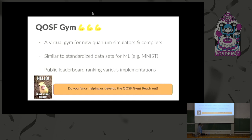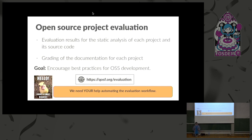We need help developing this — if you fancy helping us build the QOSF gym, reach out because we have limited bandwidth. Also in this pillar is the open source project evaluation currently accessible on the QOSF website. The idea is to have evaluation results for static analysis, things like code coverage of various projects, but also a grading scheme for documentation — encouraging best practices and helping newcomers decide which project to spend their time on. You probably don't want to join a project that takes three months to get back to your pull request or has poor documentation. We want to help projects become aware of their shortcomings and fix them. Right now this process is very manual and painful, and there should be good ways of scripting it, so if you're interested in helping automate it, let us know.